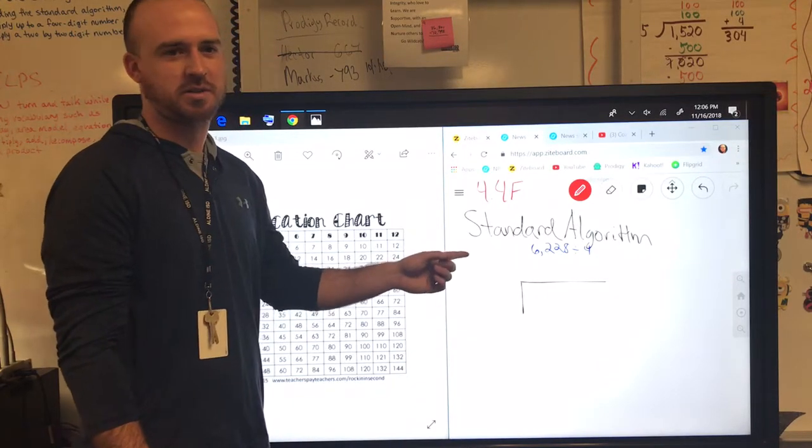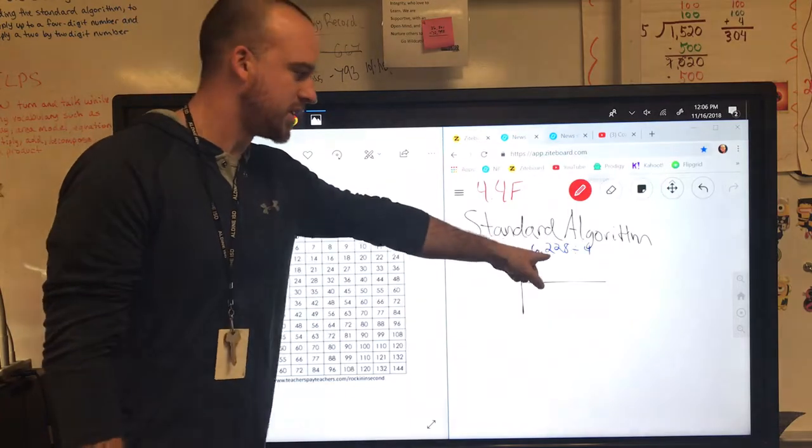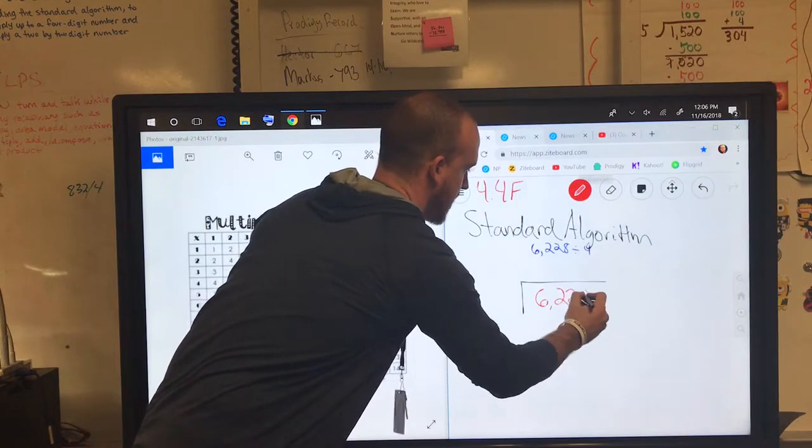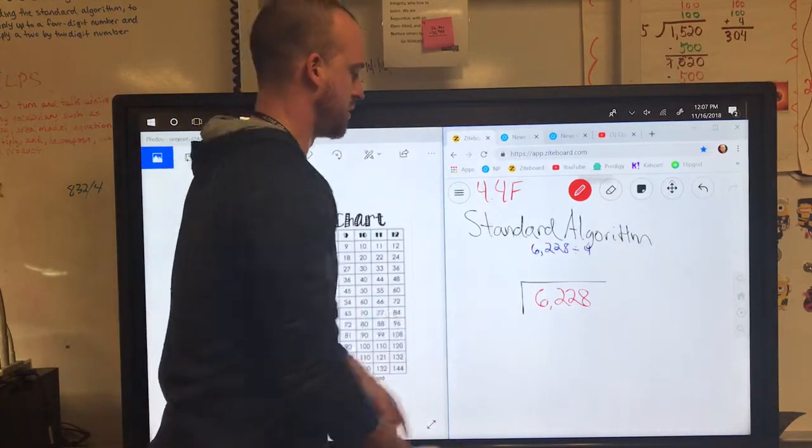Another way I teach my students to divide is called the standard algorithm. I put my dividend of 6,228 inside the box. I put my divisor of 4 on the left side.